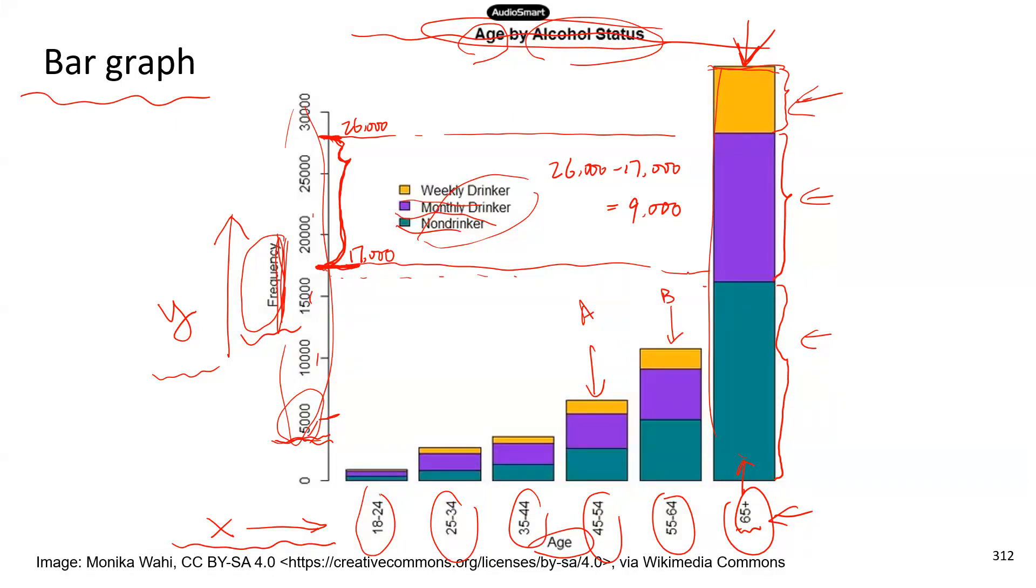Between groups A and B, which group has more monthly drinkers? Okay, you have four seconds. All right. Monthly drinkers are represented by purple. So you need to check the purple portion of each graph. And group B, 55 to 64, has a taller portion of the purple group. So this age group, which is B, has more monthly drinkers.